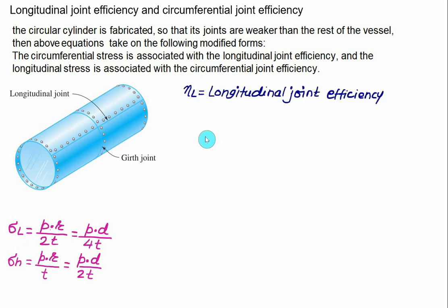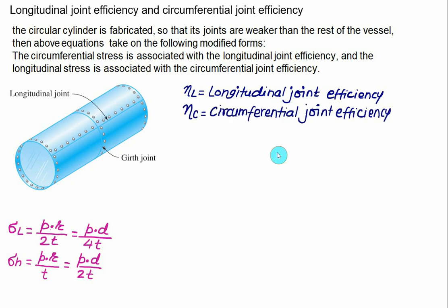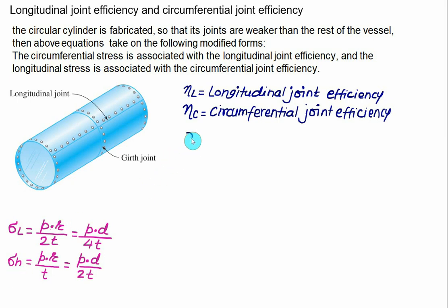Let eta-L represent the longitudinal joint efficiency and eta-C represent the circumferential joint efficiency. The circumferential stress or hoop stress is associated with the longitudinal joint efficiency. So the hoop stress equation is modified: hoop stress equals P times D divided by two times T, further divided by the longitudinal joint efficiency.